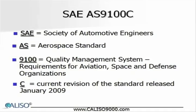AS is the acronym for Aerospace Standard. This nomenclature indicates the type of technical document. 9100 is the document reference number for the standard that defines the quality management system requirements for aviation, space, and defense organizations.